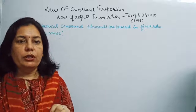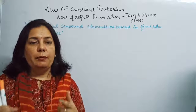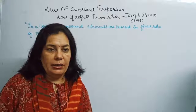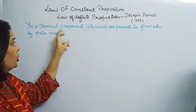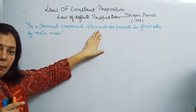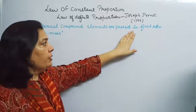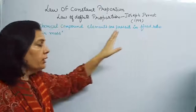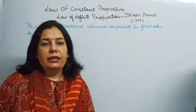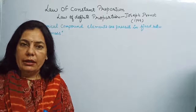According to this law, in a chemical compound, elements are present in a fixed ratio by their mass. It means if we talk about any chemical compound, all the elements which are present in that compound are always present in a fixed proportion according to their mass.